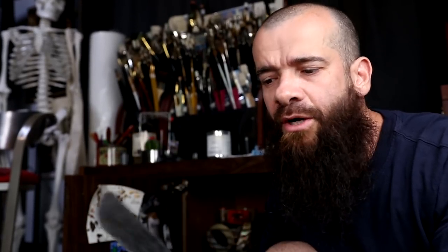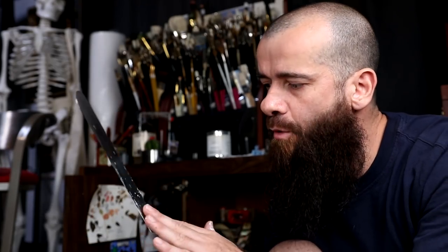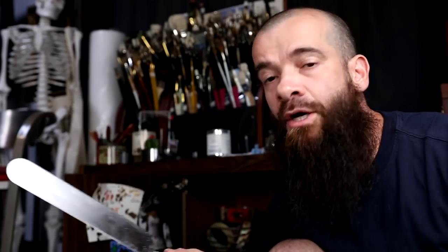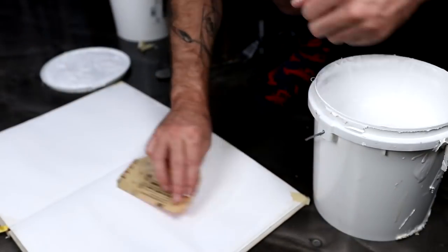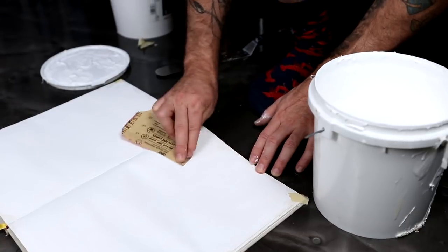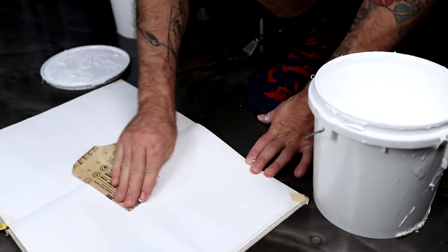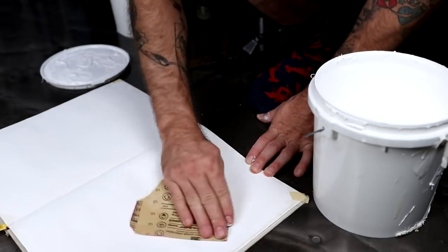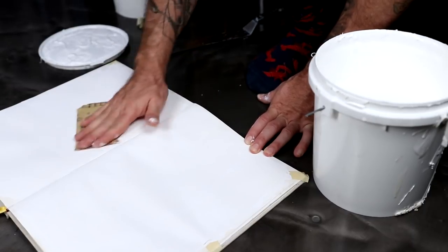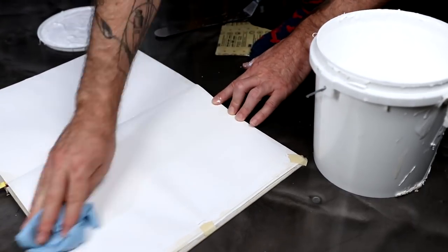Every time I use the spatula I also go and wash it because gesso gets dry really quick, and even this has some old spots of dry gesso. You don't want to have that. You want to have a nice clean surface to apply the gesso. So let's do the final layer.